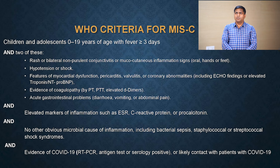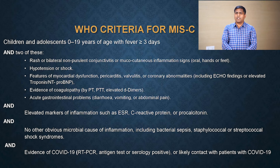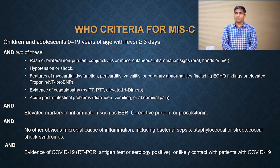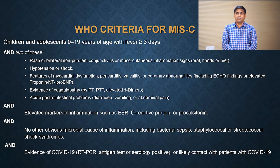Or acute gastrointestinal problems in the form of diarrhea, vomiting, or pain abdomen. So fever with any 2 of these signs, and there should be elevated inflammatory markers in the form of raised ESR, raised C-reactive protein, or procalcitonin. You should exclude other causes of inflammation like microbial infection, bacterial sepsis, staphylococcal or streptococcal shock syndrome. There should also be evidence of COVID-19 infection — present infection identified by RT-PCR, past infection by serology, or contact with a COVID-19 patient.